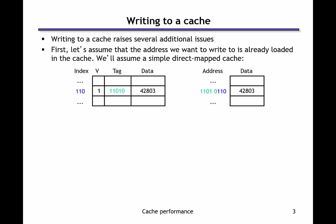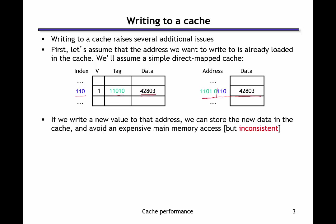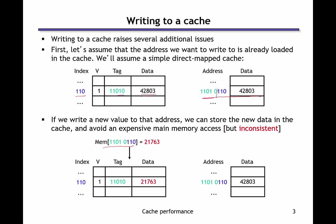Writing to the cache brings up two particular issues. The first is: if the data is already in our cache, how should we handle writes? Consider a direct map cache where we've taken a value and put it in the cache — index 110 and the tag 11010. If we want to write to that address and perform a store with a new value, we potentially create an inconsistency: the value in the cache is not the value stored in memory for that address.